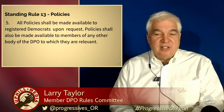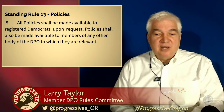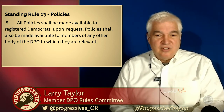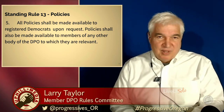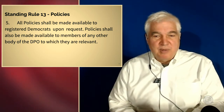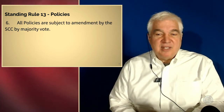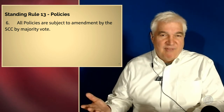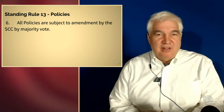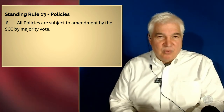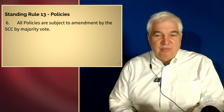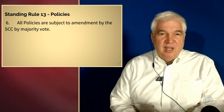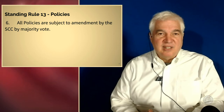Number five: all policies shall be made available to registered Democrats upon request. Policies shall also be made available to members of any other body of the DPO to which they are relevant. This is to make clear that there are no secret policies within the Democratic Party of Oregon and ensures transparency. The final one: all policies are subject to amendment by the State Central Committee by majority vote. This is implied by the fact that we are a deliberative assembly, and so our underlying rules are Robert's Rules of Order. Like many rules, people are not familiar with Robert's Rules of Order, so sometimes it's beneficial to reiterate these rules inside the standing rules.